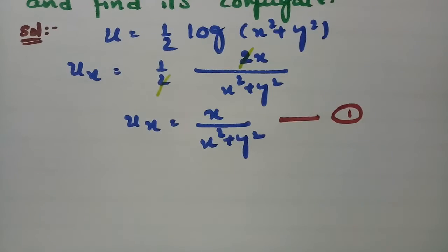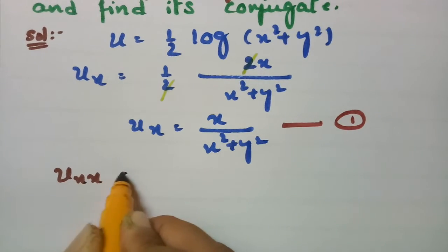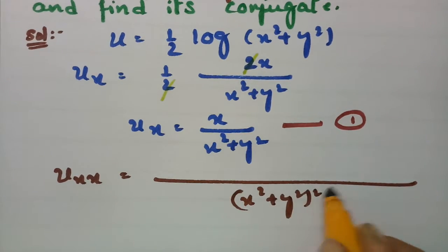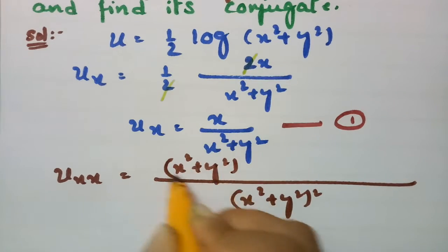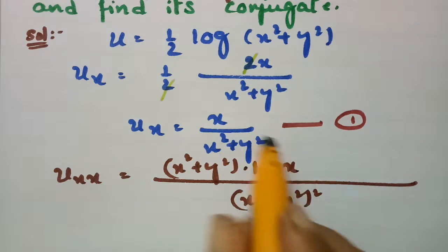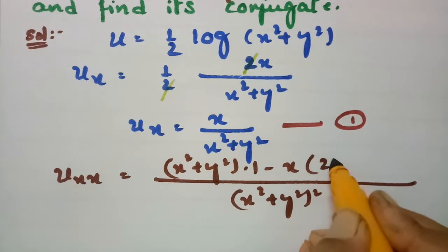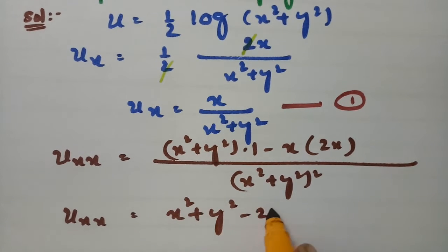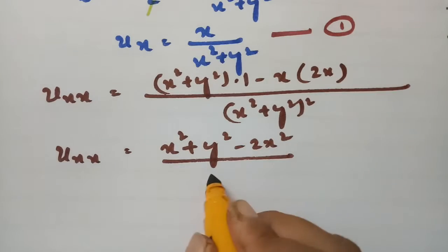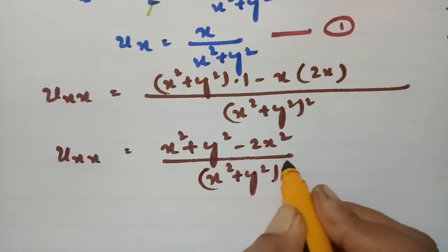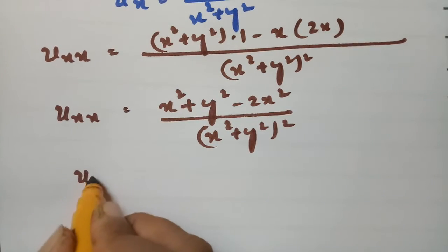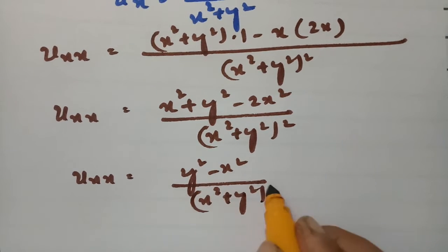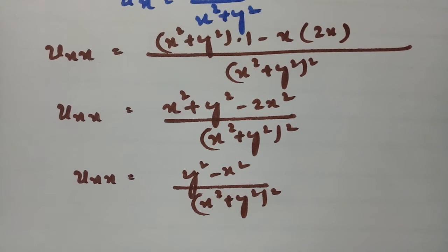Taking the second derivative with respect to x using the quotient rule (uv rule): uxx = [(x²+y²)·1 − x·2x] / (x²+y²)². Simplifying, uxx = (y²−x²)/(x²+y²)². This is equation number 2.